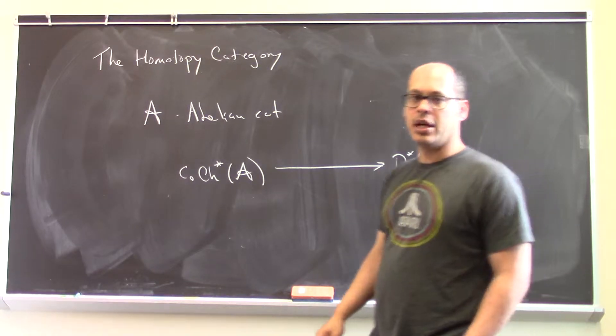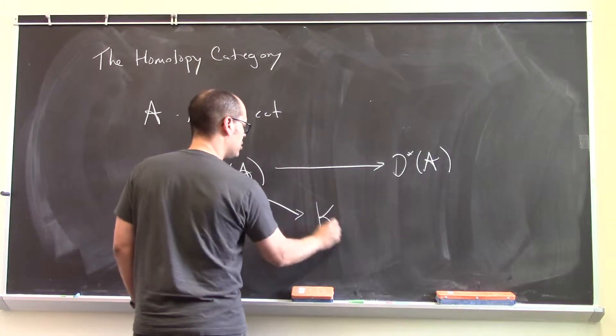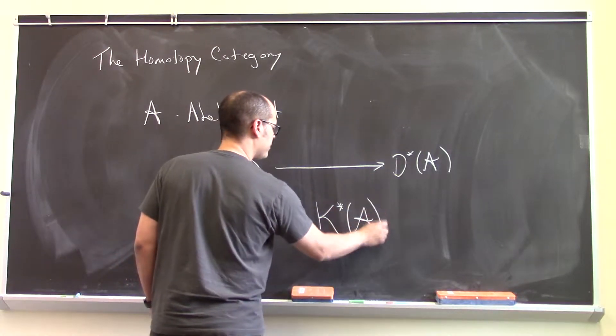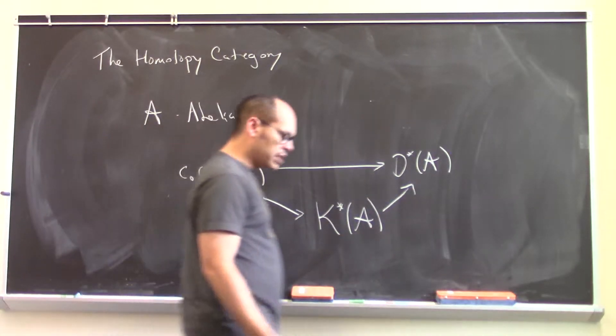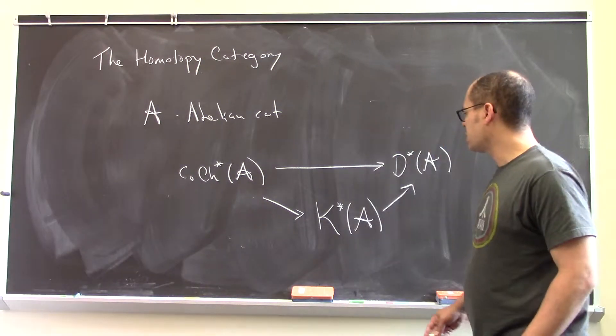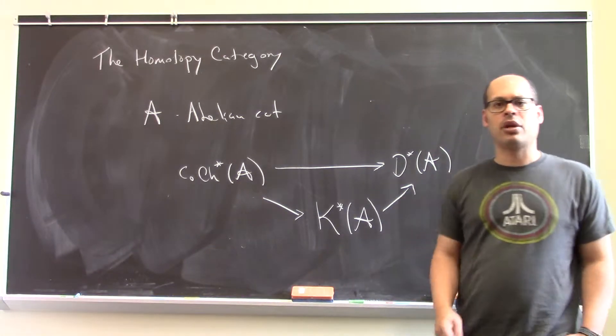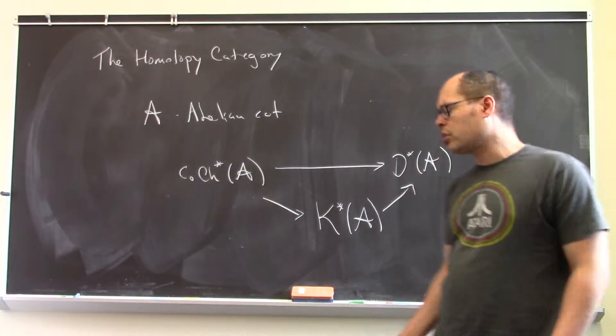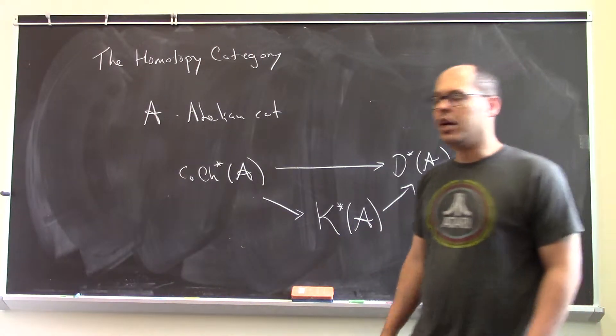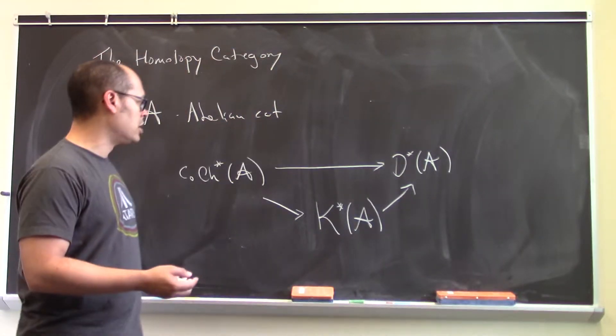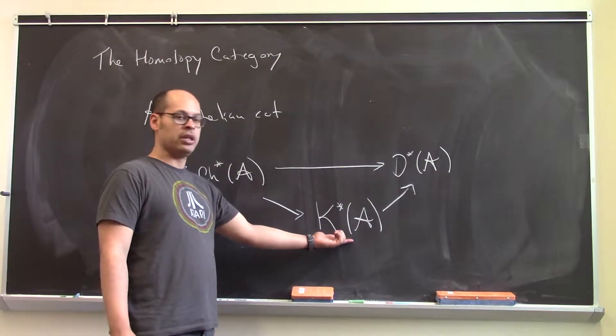But instead, one could do an intermediate category called the homotopy category, which we'll write with a K. And then go from K to D(A). The advantage in doing this is that, first off, the passage from here to there is straightforward to describe. We have a lot of control over what the morphisms in this category look like. And moreover, a lot of important structure that we would like in the derived category is already apparent in the homotopy category.